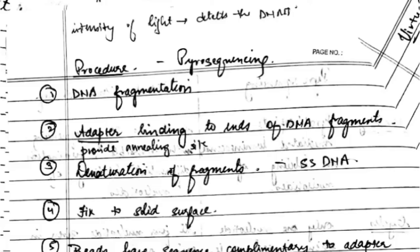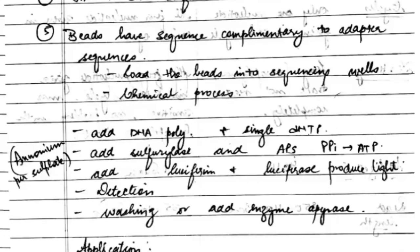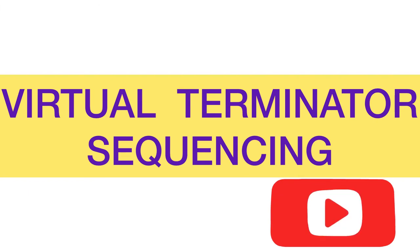The procedure is: DNA fragmentation, then the adapter is bound, denaturation of fragments into single-stranded DNA, fixation to a solid surface, beads with sequences complementary to the adapter, and finally you add DNA polymerase, DNA sulfurase, and luciferin, then detect with a sensor. Some applications are also mentioned. Next is virtual terminator sequencing.